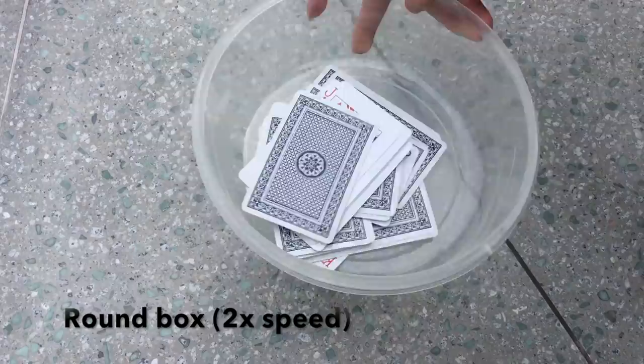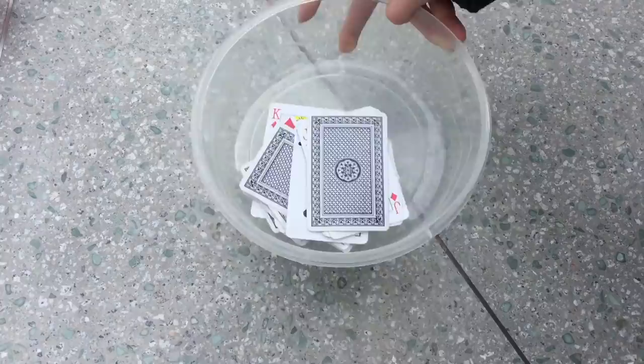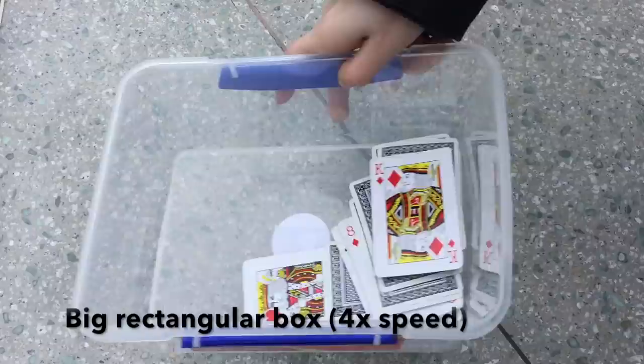Then, we use the rectangle container with larger size to repeat the experiment. Finally, we use the square container with smaller size to do the experiment again.